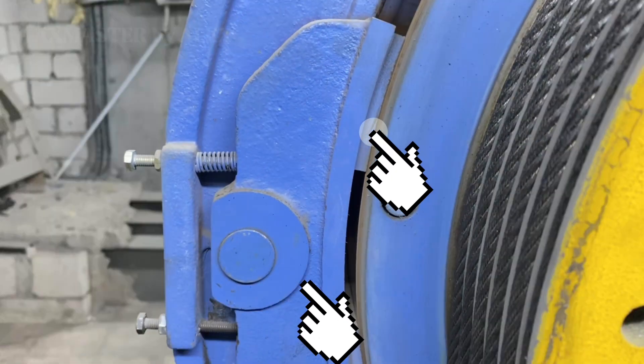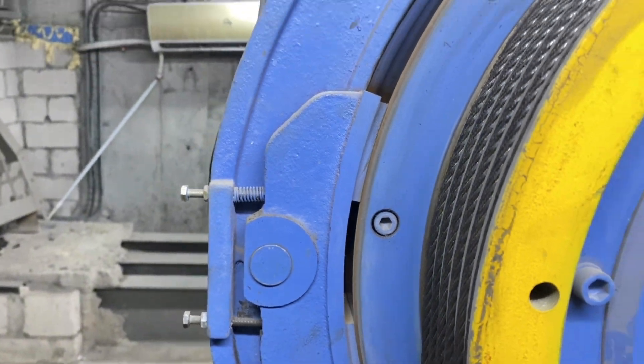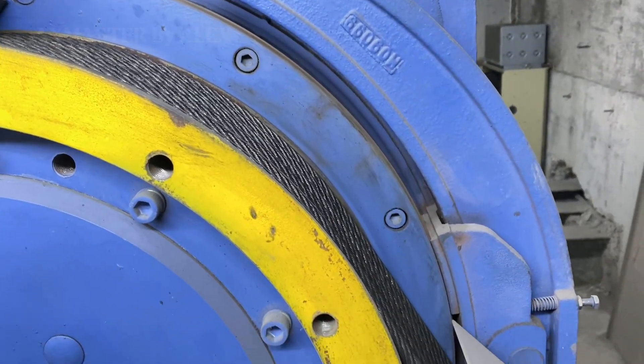Next, we have the brake shoe and brake liner. There are two of these, one on the left side and the other on the right side. The liner provides grip to hold the elevator when it stops.